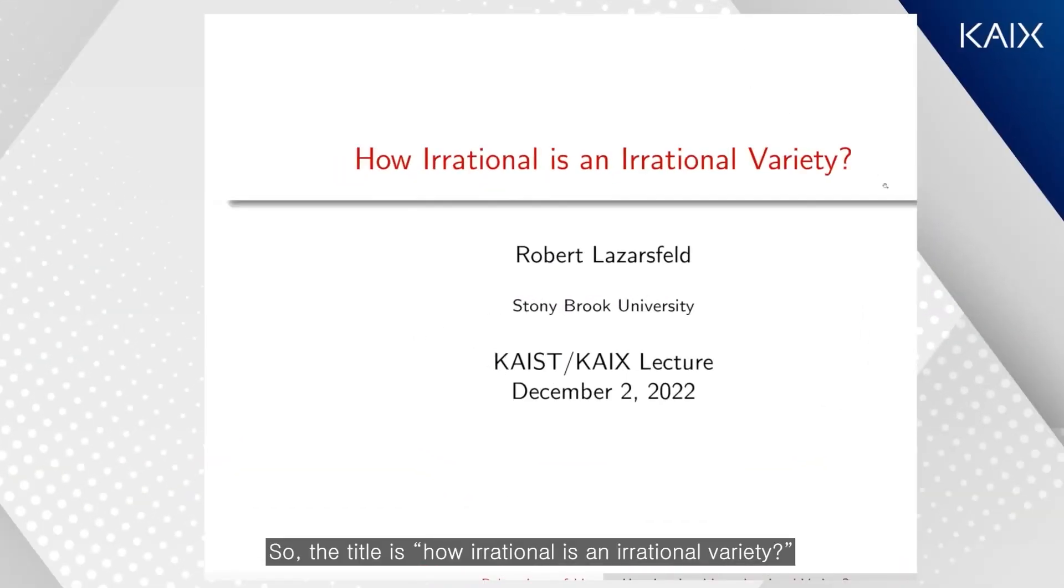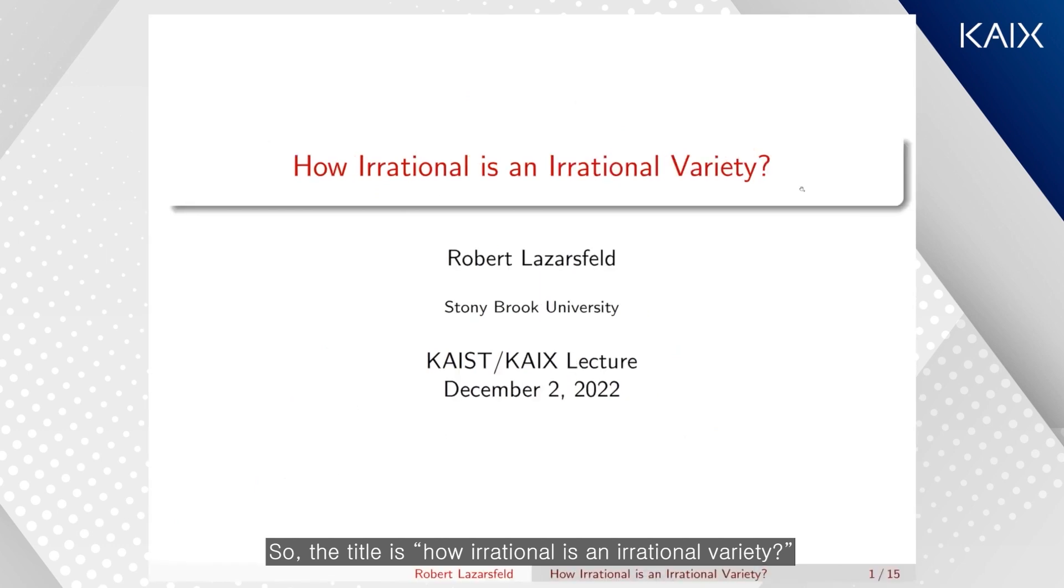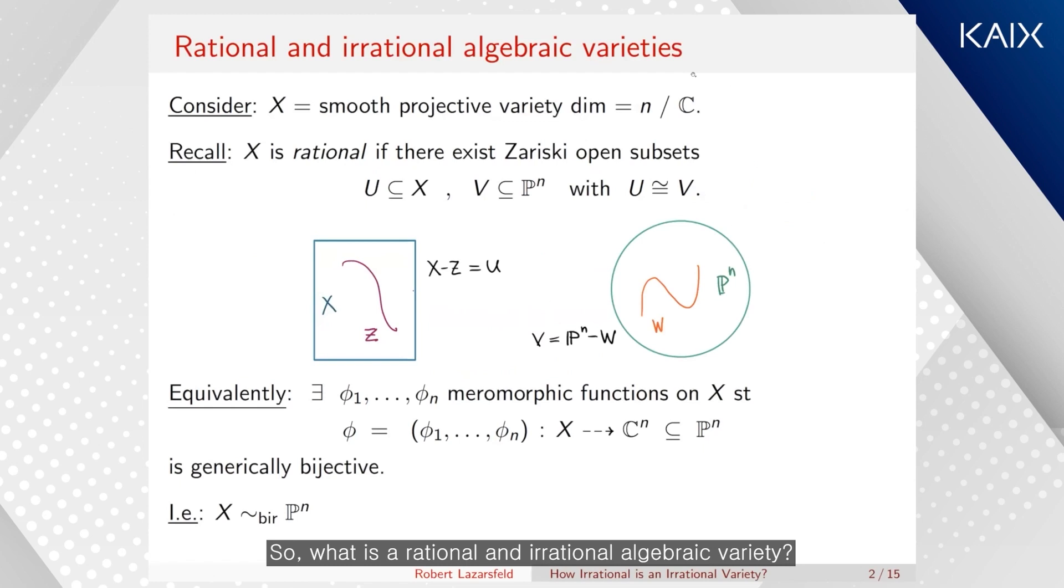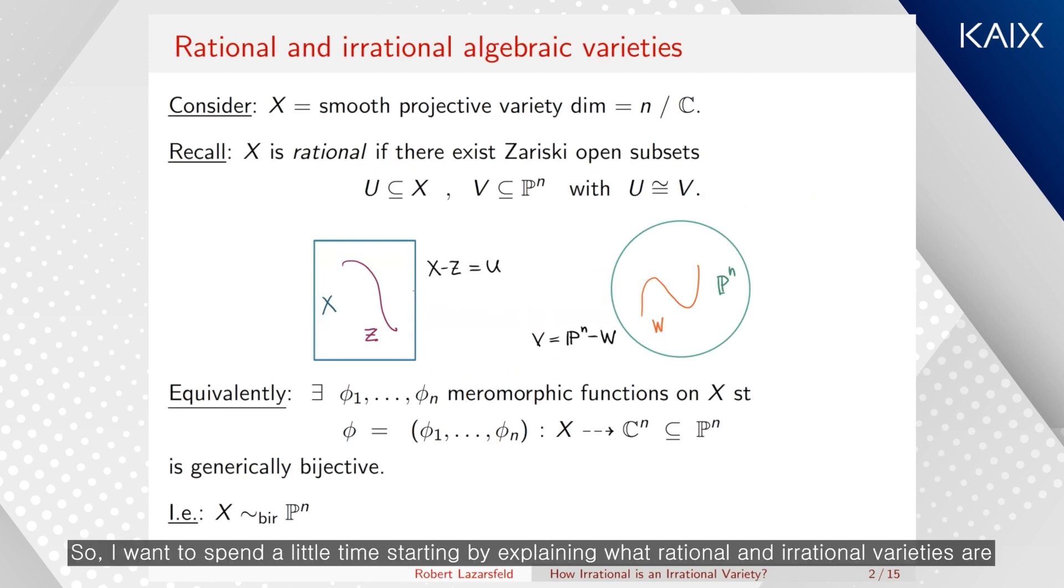Okay, so the title is how irrational is an irrational variety. So what is a rational and irrational algebraic variety? This is something that's very important and fundamental in algebraic geometry, but it doesn't really have a direct analog, for example, in topology or differential geometry. So I want to spend a little time starting by explaining what rational and irrational varieties are.